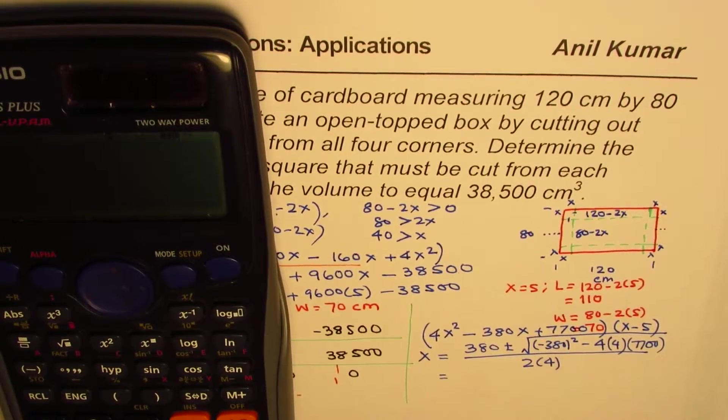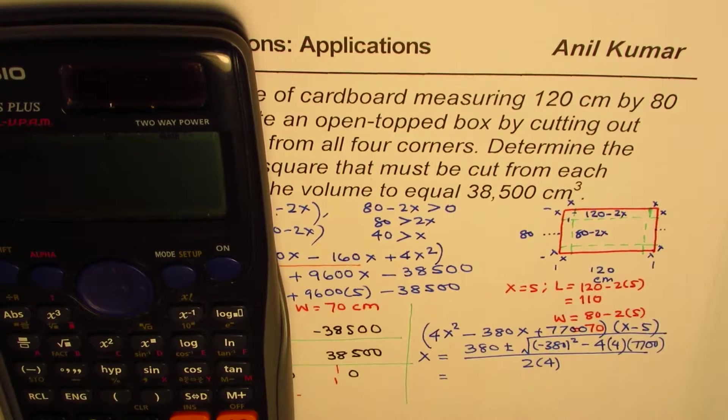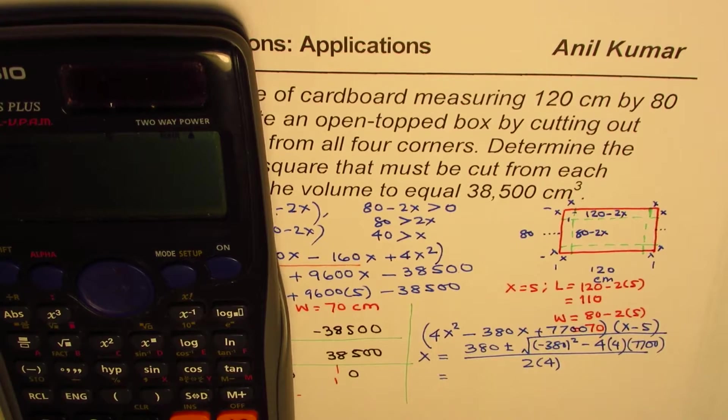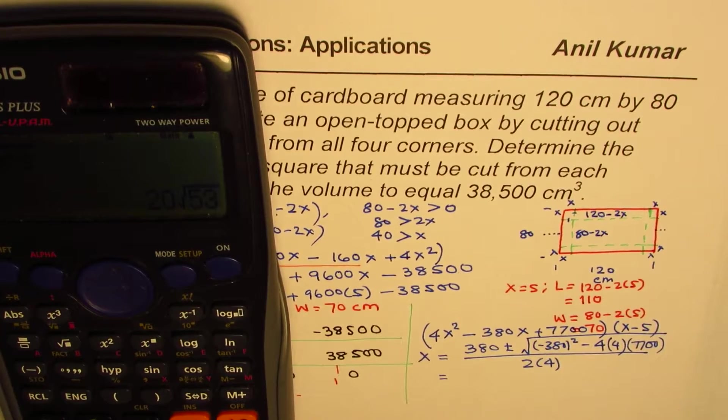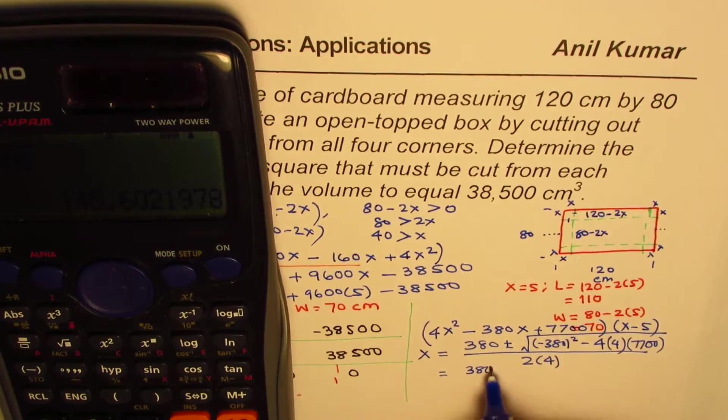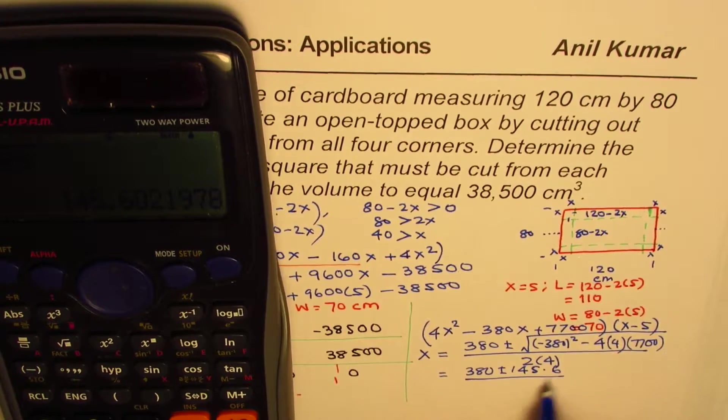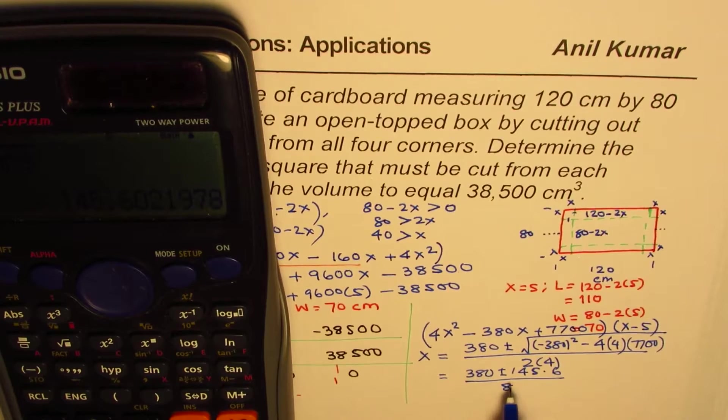So it is 380 square minus 16 times 7,700, which is 21,200. So let's do square root of the answer, that is 2053. So let's write decimal value of this. So we have 380 plus minus 145.6, let us say, divided by 8. So that gives us 2 values.